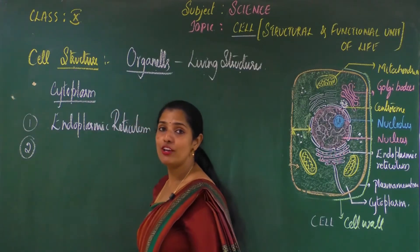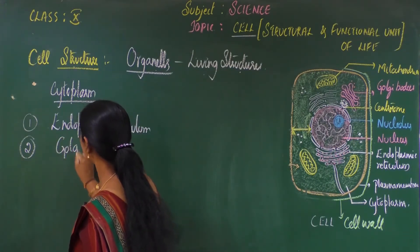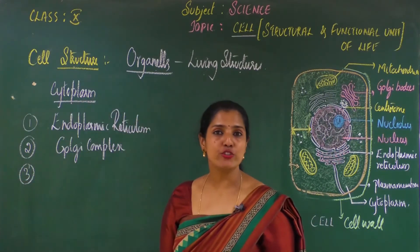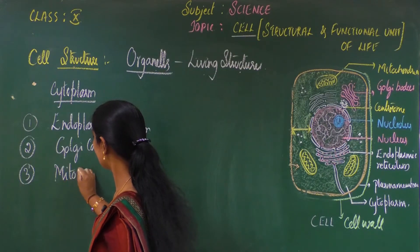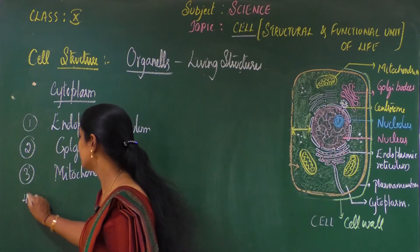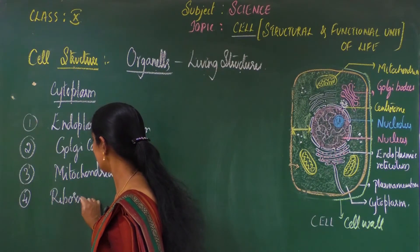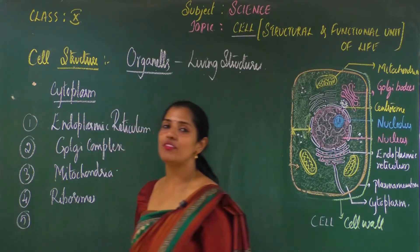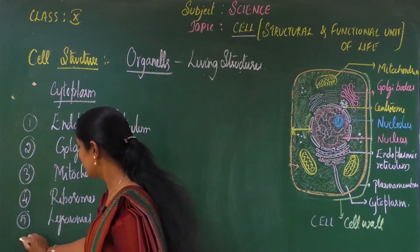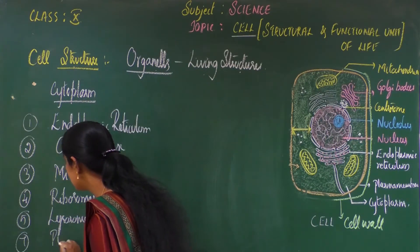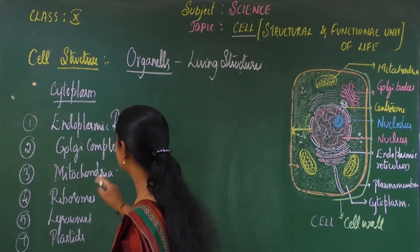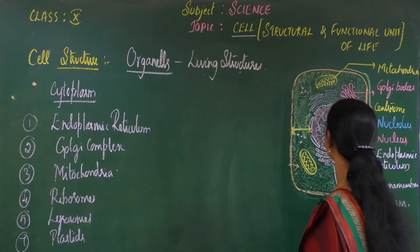Next we have the Golgi apparatus, or Golgi complex. Third we have mitochondria. Fourth we have ribosomes. Fifth we have lysosomes. We also have vacuoles.